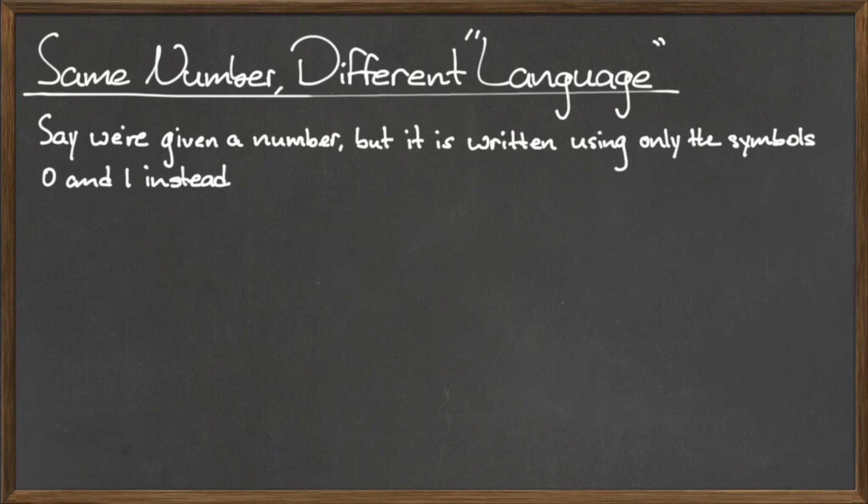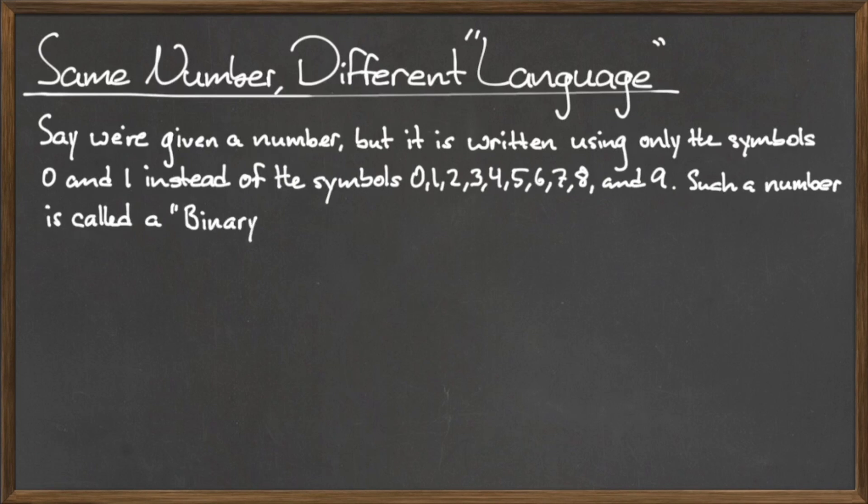We write numbers in base 10 using the digits 0 through 9. The binary number system is a base 2 number system where we write numbers using only the digits 0 and 1.